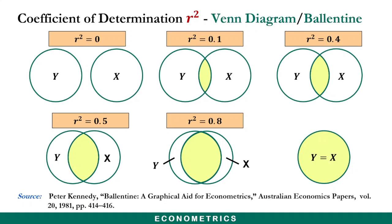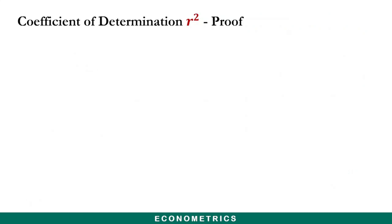It is obvious that in the last panel, R-squared value is 1, which indicates that 100% of the variation in Y is explained by X. At this point, let us go ahead and look at the proof of the coefficient of determination.